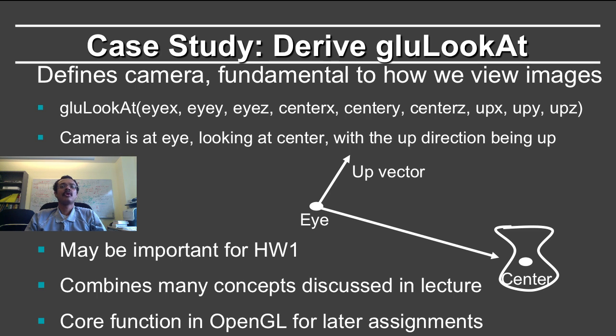This 4 by 4 transformation matrix can be used to view objects and position an arbitrary camera in the world.